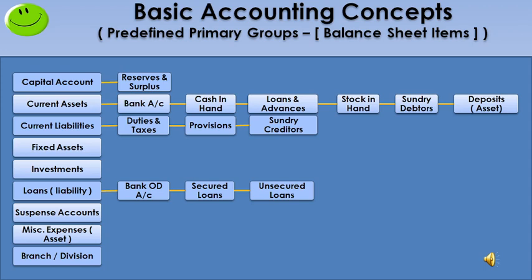Next, loan liability — it is a primary group with three subgroups. First, bank overdraft — sometimes we issue a cheque for more money than is in our account. The bank passes the cheque and collects the deficit amount on the next transaction with interest. Next, secured loan — for business development, we receive a loan from a bank or financial institution by pledging our company assets. That is called a secured loan.